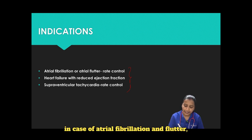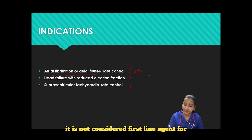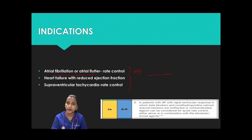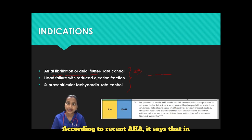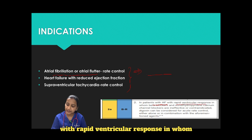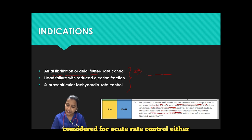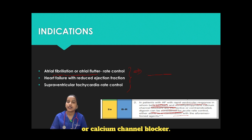Although in case of atrial fibrillation and flutter, it is not considered a first-line agent for rate control. According to recent AHA guidelines, in patients with AF with rapid ventricular response in whom beta blockers and calcium channel blockers are ineffective and contraindicated, digoxin can be considered for acute rate control either alone or in combination with a beta blocker or calcium channel blocker.